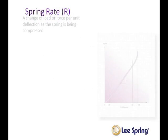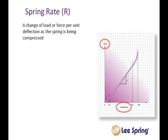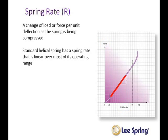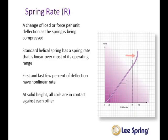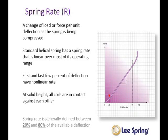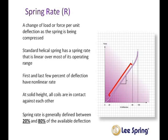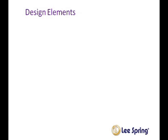Spring rate is a change of load or force per unit deflection as the spring is compressed. As an example, spring rate may be specified as the amount of force to move a spring one inch. A standard helical compression spring has a spring rate that is essentially linear over most of the operating range. The first and last few percent of the spring's deflection has a nonlinear rate. When a spring reaches solid height, the spring coils are stopped against each other. Spring rate is generally measured between twenty percent and eighty percent of available deflection.